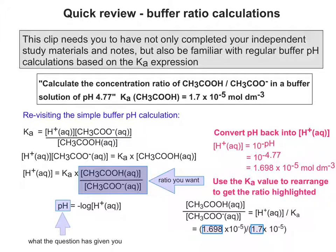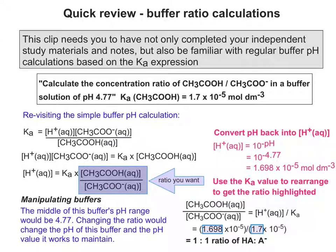So the two numbers that I've highlighted represent a 1 to 1 ratio because it's the same order of magnitude times 10 to the minus 5. So that means that because it's a 1 to 1 ratio, the middle of this buffer's pH range, its working pH range, would be 4.77.